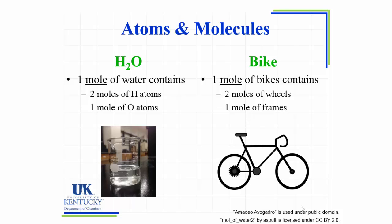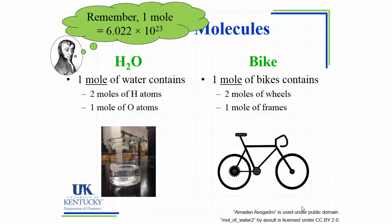Let's look at what happens when we have one mole of water molecules. Remember, this just means that we have 6.022 times 10 to the 23rd molecules of water. If I go from having one molecule of water to having one mole of water molecules, it's just a counting number. I'm just multiplying the number of molecules by Avogadro's number. Therefore, if I have one mole of water, I can say it contains two moles of hydrogen atoms and one mole of oxygen atoms. Just like if I have a bike or I have a mole of bikes, I have two moles of wheels and one mole of frames.